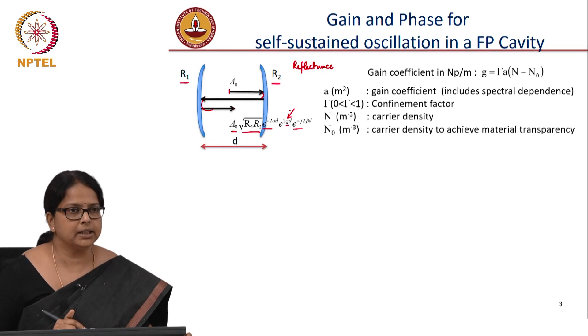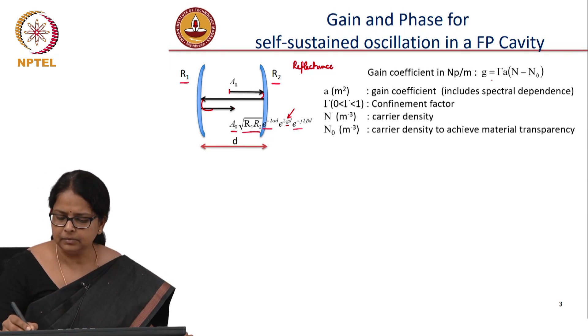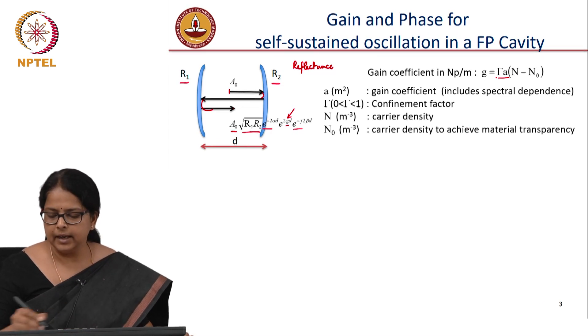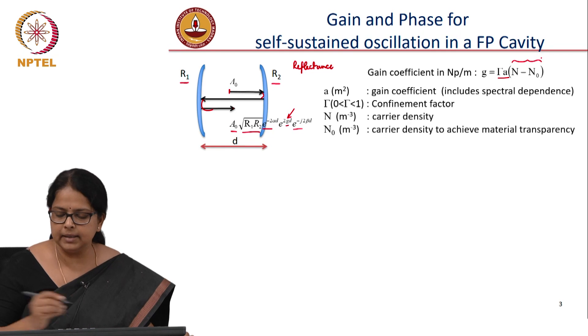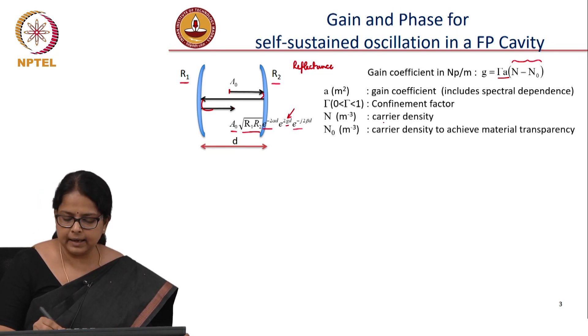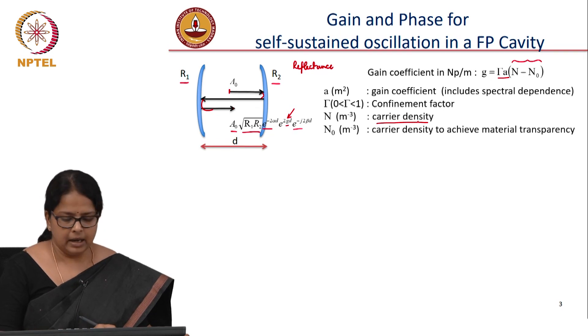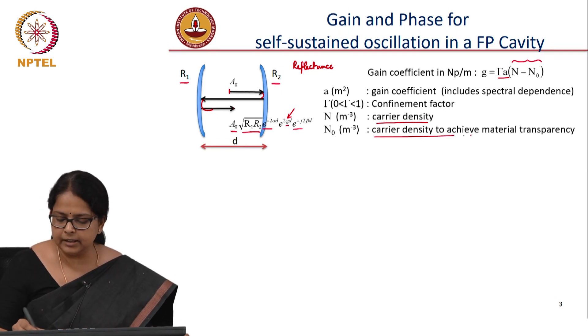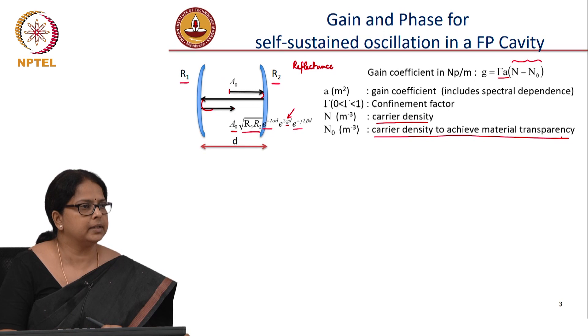The gain coefficient for a semiconductor medium gets defined as g equals, I will tell you what these constants are, but these are constants. It is proportional to N minus N naught, where N is the carrier density, N naught is a carrier density to achieve material transparency.